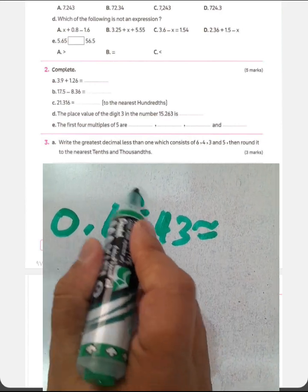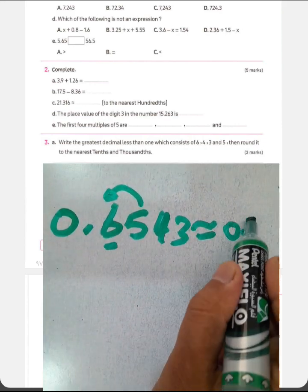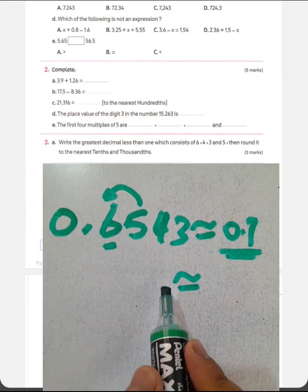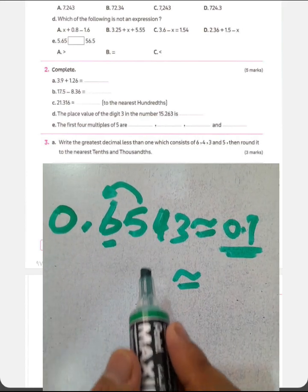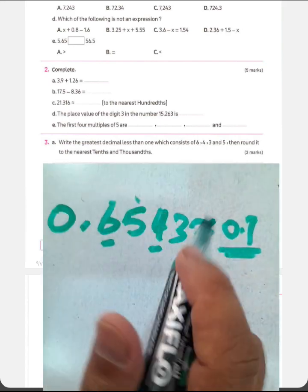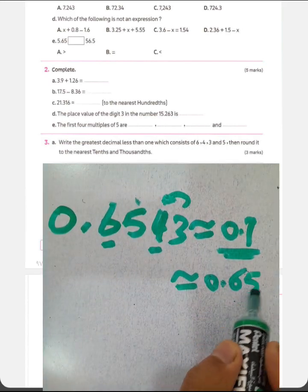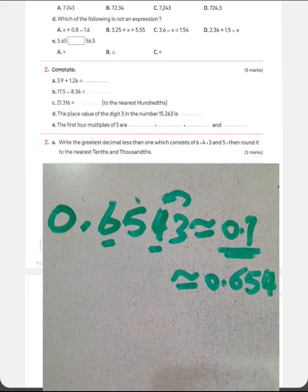We can approximate it to the nearest tenths and thousandths. Tenths here, 6. 5 can give 1 to this number. It will be 0.7, it's approximate to the nearest tenths. And approximate it to the nearest thousandths here, 4. 3 can't give 1 to the digit. It will be 0.654.